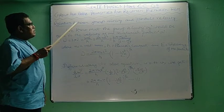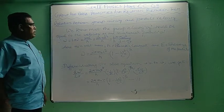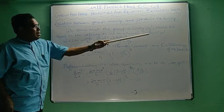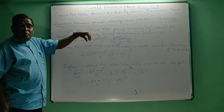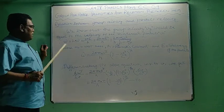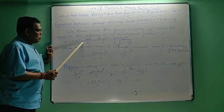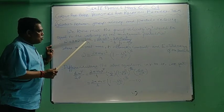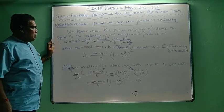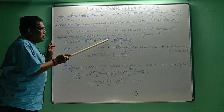Now we will calculate the relation between group velocity and particle velocity. We know that the group velocity vg should equal the velocity of the material particle v — this was proved in our previous class. Since omega = 2π·nu, and E = h·nu so nu = E/h, omega equals 2π·E/h. And from Einstein's mass-energy equivalence, E = mc², so omega becomes 2π·mc²/h.